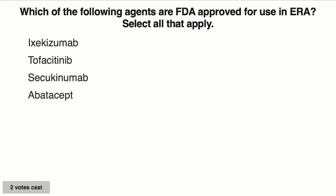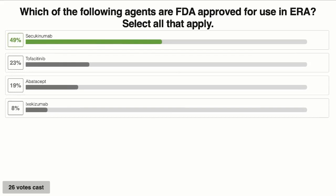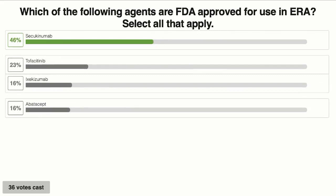From the management pretest: secukinumab is the only drug listed that has FDA approval for the specific indication of enthesitis-related arthritis.